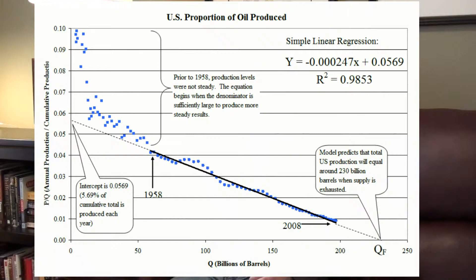As this chart shows, the relationship between P divided by Q and Q becomes linear as production matures. This linear relationship follows the simple y equals mx plus b format for graphing a line in a plane. Hubbert's logistic differential equation has a linear property, and we can exploit this relationship with the linear representation of P over Q versus Q itself.